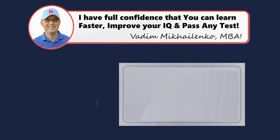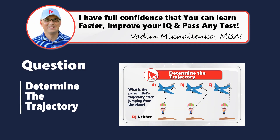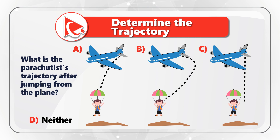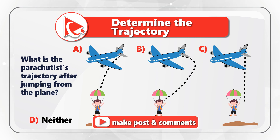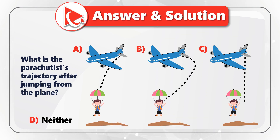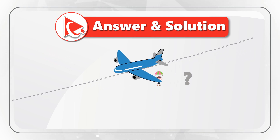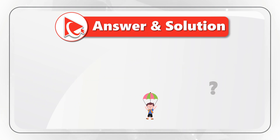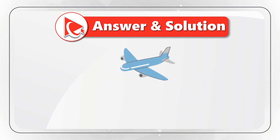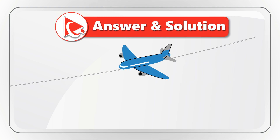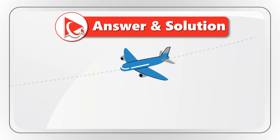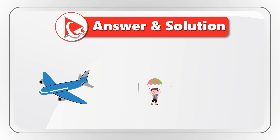I have full confidence in your skills and knowledge, so I'm moving forward to share my version of the answer. To better understand the answer, we need to determine what changes from when the parachutist is inside the plane to when they jump. When the parachutist is inside the plane, both the parachutist and the airplane are moving together in the same direction.